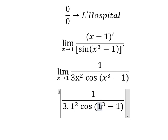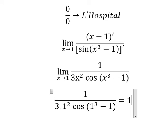So 1 minus 1 is 0. Cosine of 0 is 1. So we get 1 over 3, and this is the final answer. Thank you for watching.